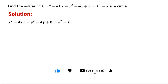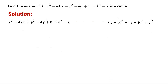Recall that the general equation of a circle is x minus a all squared, plus y minus b all squared, equals r squared, where the circle's center is (a, b) and the radius is r. For the given equation to represent a circle, it must be possible to write it in the above form.